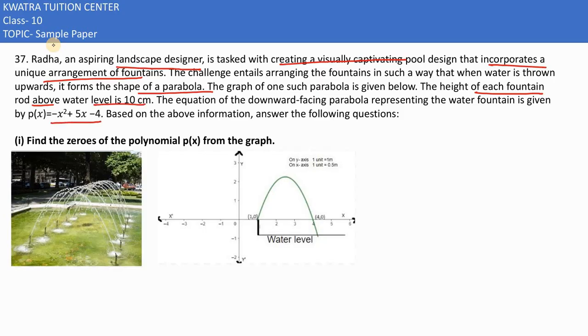The equation is given, and the first question asks to find the zeros. From the graph, I can see it meets at point 1 and point 4, so the zeros are 1 and 4.